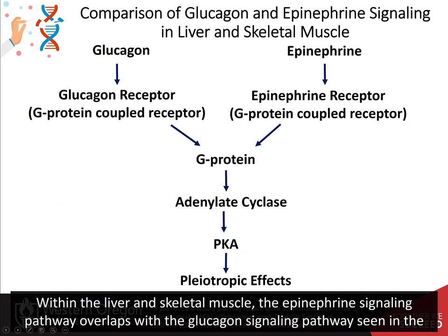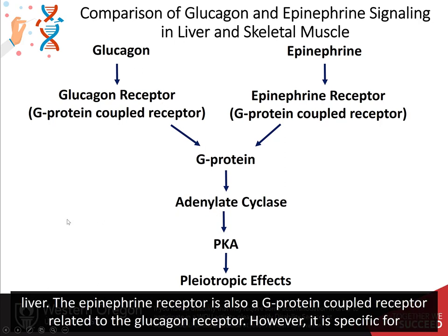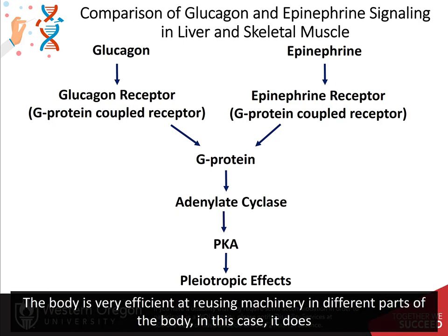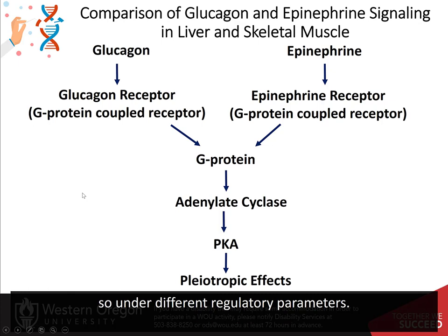Within the liver and skeletal muscle, the epinephrine signaling pathway overlaps with the glucagon signaling pathway seen in the liver. The epinephrine receptor is also a G-protein-coupled receptor related to the glucagon receptor. However, it is specific for epinephrine and cannot bind glucagon. It does activate the same G-protein pathway leading to protein kinase A activation. The body is very efficient at reusing machinery in different parts of the body, in this case under different regulatory parameters.